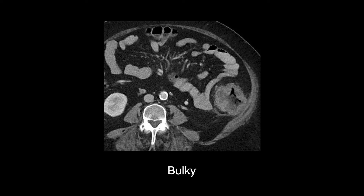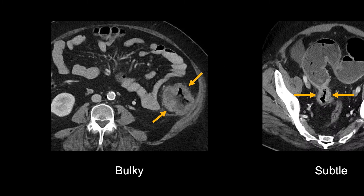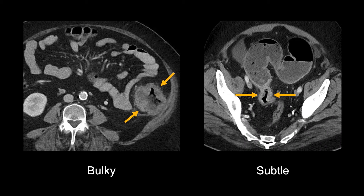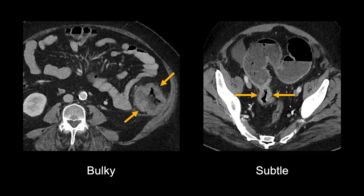Colon cancer on CT can range from a bulky and irregular mass to relatively subtle thickening of the wall. It might surprise you that a larger mass will not always cause obstruction. In this example, the bulky descending colon mass did not obstruct, but the smaller mass in the sigmoid colon did cause obstruction.